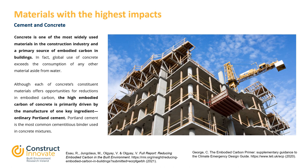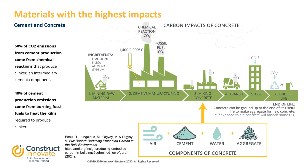Portland cement is the most common cementitious binder used in concrete mixes. In the concrete life cycle, cement is a major component and the most significant CO2 emissions contributor. 60% of the CO2 emissions from cement production come from the chemical reaction to produce clinker, an intermediate cement component. 40% of cement production emissions come from burning fossil fuels to heat the kiln required to produce clinker. These values can vary depending on the manufacturing processes used and the primary material used to heat the precalcinator and the kiln.